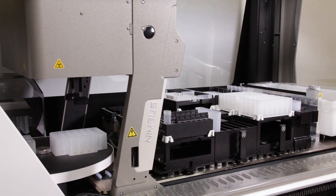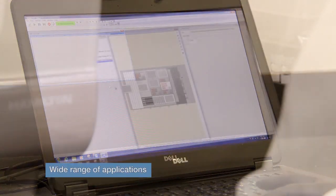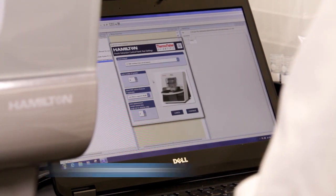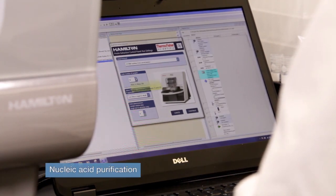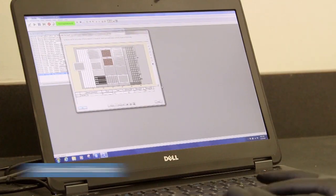The Kingfisher Presto system can be used for a wide range of applications and works with a variety of reagents, including Invitrogen and Applied Biosystems kits. Users can optimize their own protocols as needed for added flexibility.